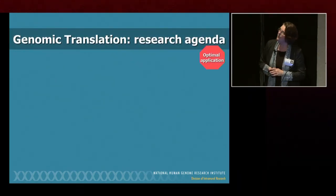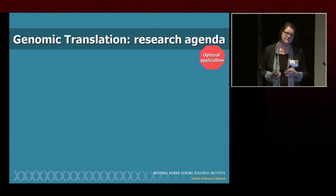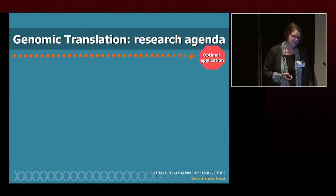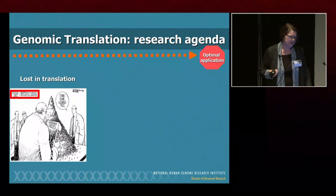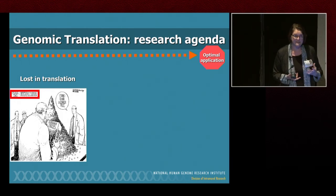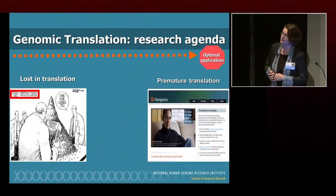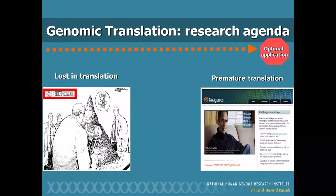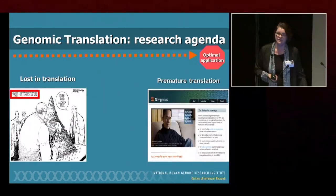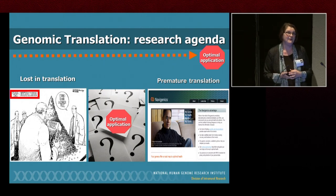Why start thinking about translation research now? In 2003, when the sequence of the human genome was completed, there were concerns about how we would ever apply it optimally. There was concern that this pile of data would get lost in translation — we wouldn't know how to use it, and it would take years to figure out. Some of that looks like it may be true. Premature translation was another concern. Direct-to-consumer tests were coming out before the public and the science were ready. The burning question is: what is optimal application, and how do we do the research to support that?